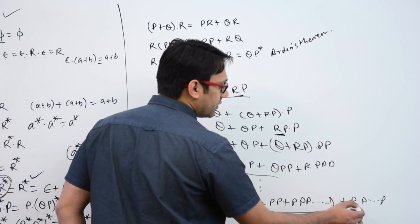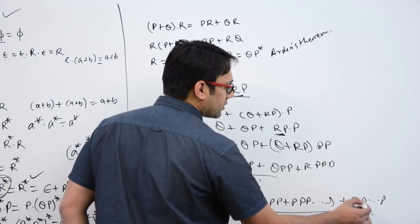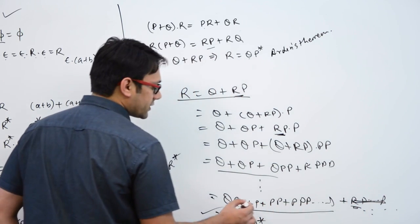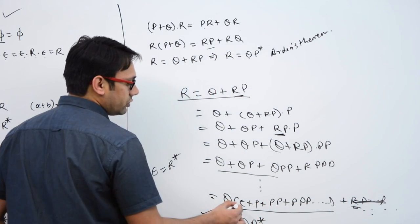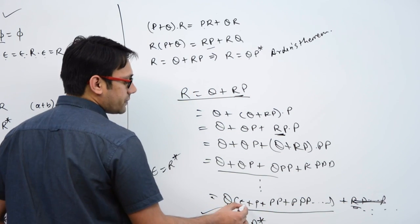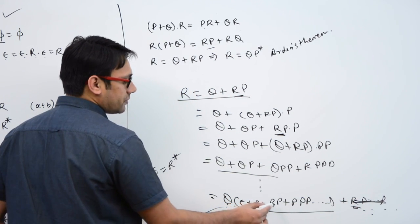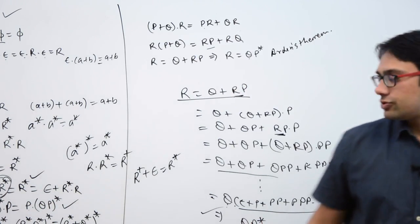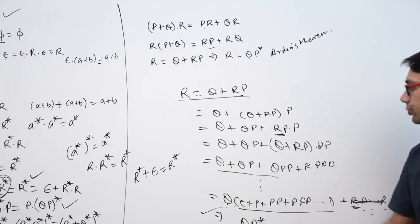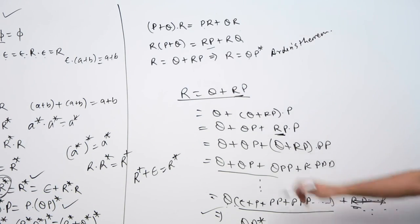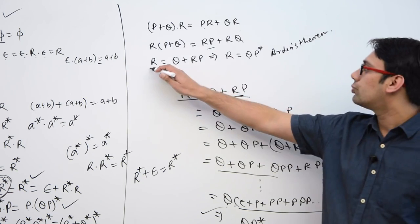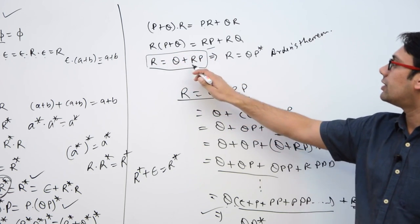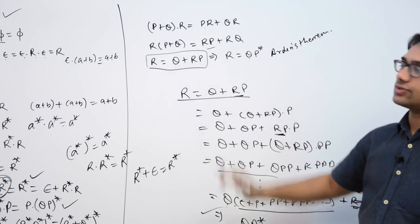Extending r to infinity, the complete expression will be q·(ε + p + pp + ... to infinity), which can be written as qp*. Therefore, if we have r = q + rp, it can be written as qp*.